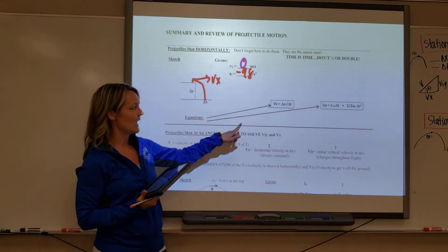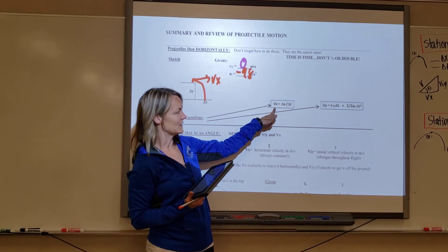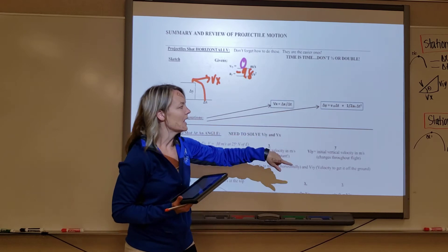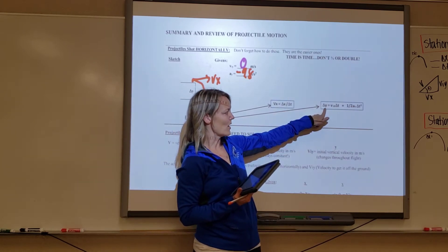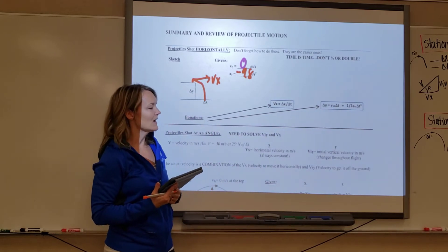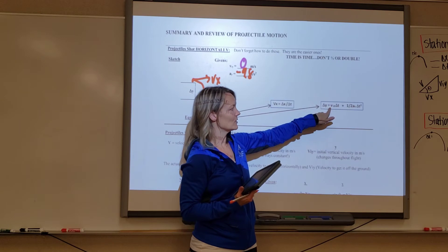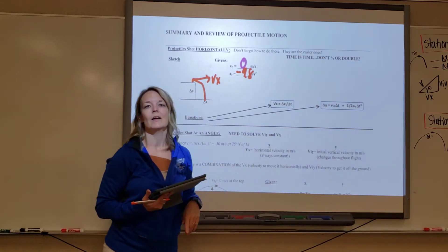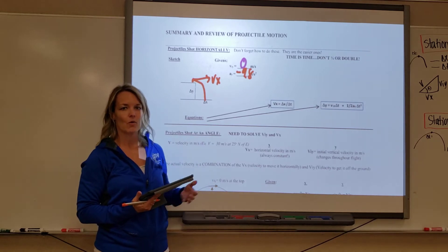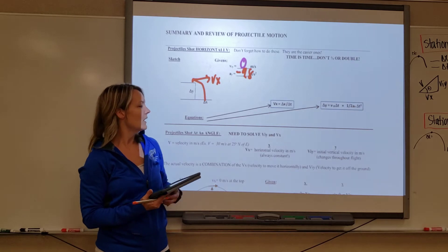For anything in the x direction, you use the equation v_x equals delta-x over delta-t — the velocity in the x direction equals the horizontal distance divided by time. For the height, delta-y, you use the kinematic equation. Because v_iy is zero for this type of projectile, the first chunk, v_iy times delta-t, cancels out.